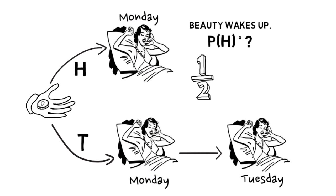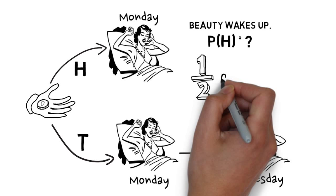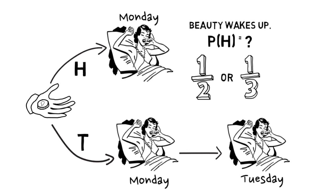Alternately, Sleeping Beauty could say: the probability that the coin came up heads is one third. There are three possible scenarios I could be in that would feel identical to each other, where I find myself waking up. And one out of those three is in the world in which the coin came up heads. More to the point, if we were to repeat this experiment many, many times, and I were to answer heads every time I find myself waking up just like this, then I would turn out to be right one third of the time. That's the argument for one third.